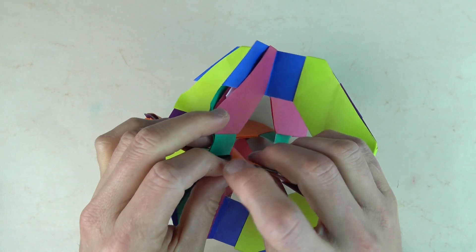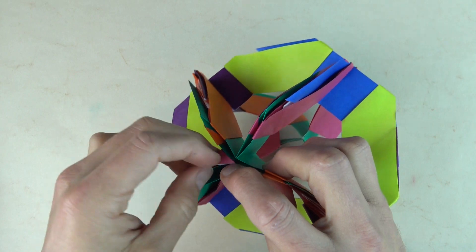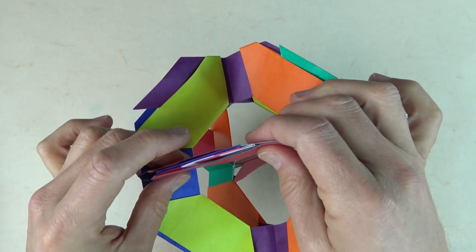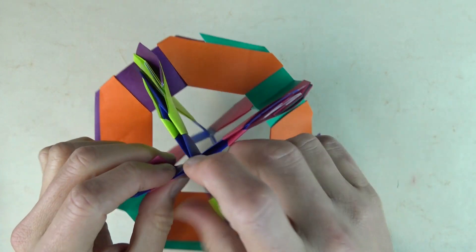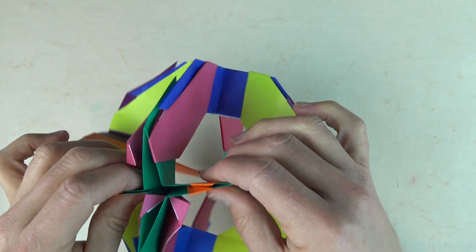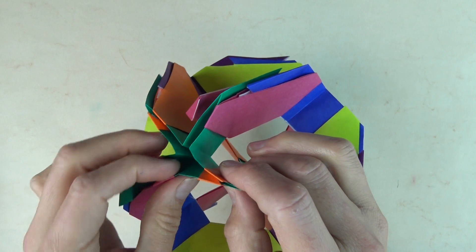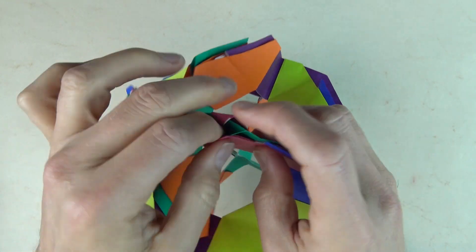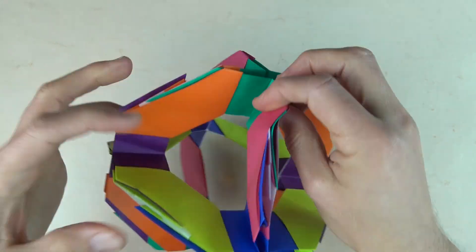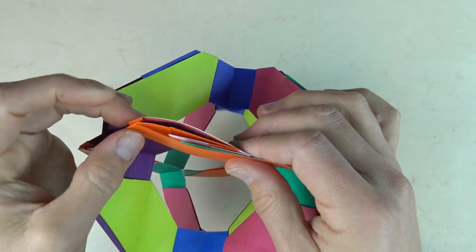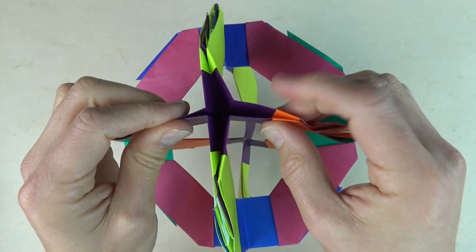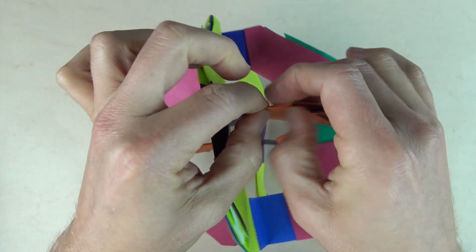And now I just reinsert any of the points that have fallen out. And expand them out all the way. And pinch all of the flaps so that they're nice and tight. And won't come out hopefully.